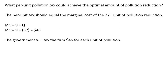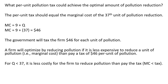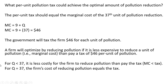The government will tax a firm $46 for each unit of pollution. A firm will optimize by reducing pollution if it is less expensive to reduce a unit of pollution — that is, paying the marginal cost to reduce that unit — than paying a tax of $46 per unit. So for Q less than 37, it is less costly for the firm to reduce pollution than to pay the tax, and the firm will voluntarily find it in its best interest to reduce 37 units of pollution.